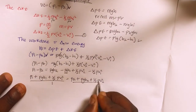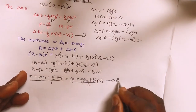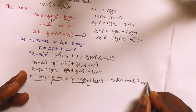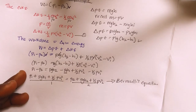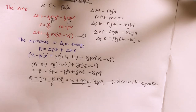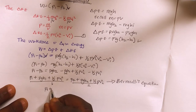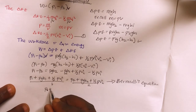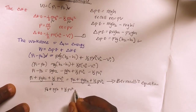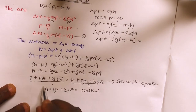Everything on the left side is at position one and everything on the right side is at position two. Since one equals two, this means p plus ρgh plus one-half ρv squared must be constant. This verifies Bernoulli's equation.